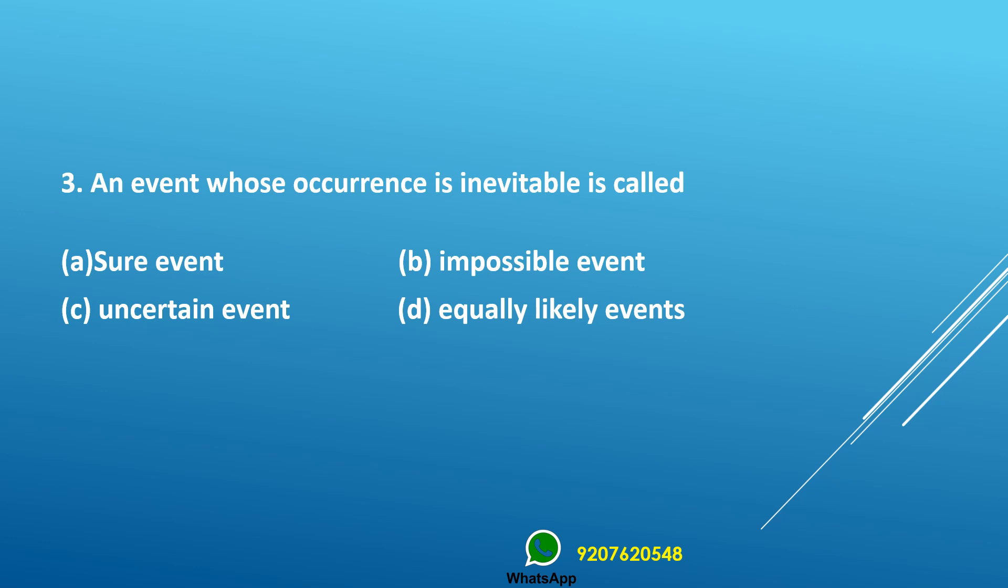Third question: An event whose occurrence is inevitable is called dash. Options: sure event, impossible event, uncertain event, equally likely event. Answer is sure event.